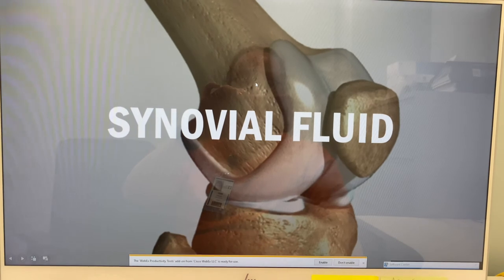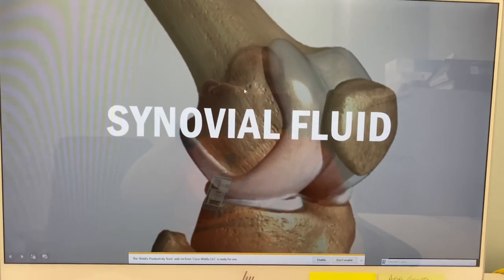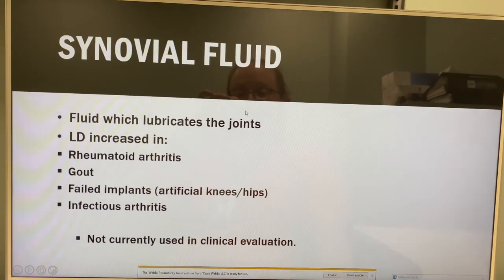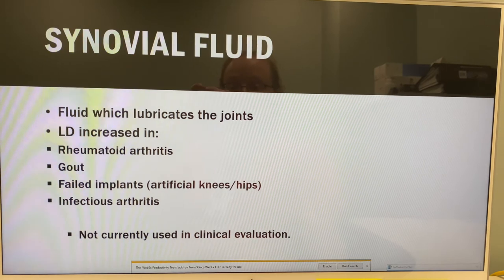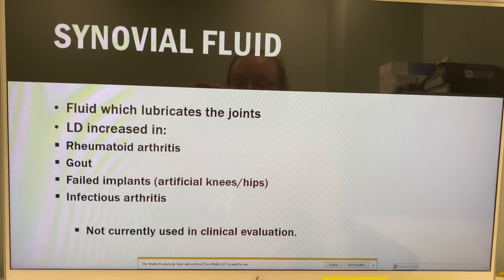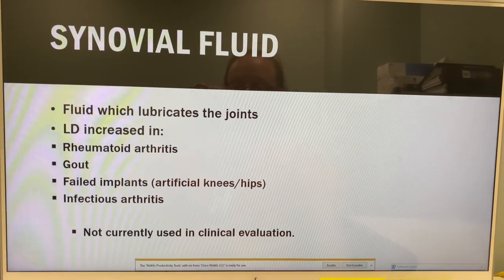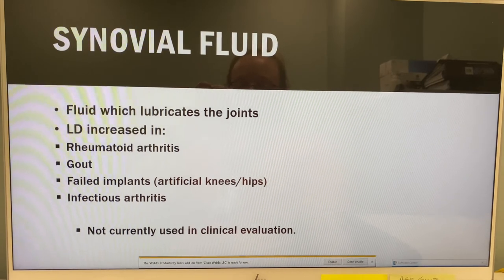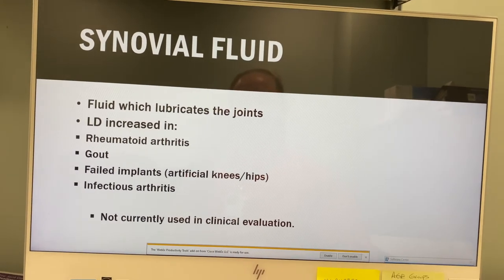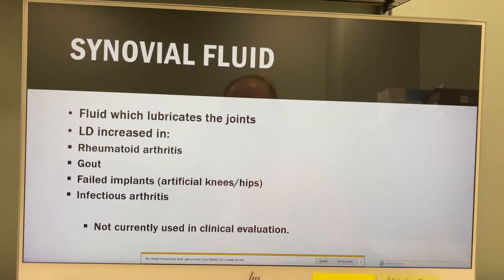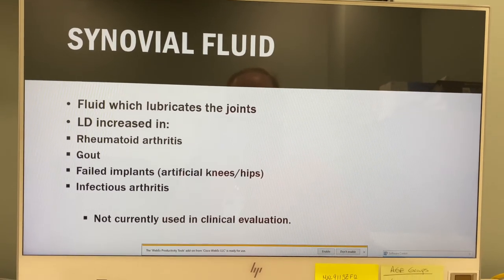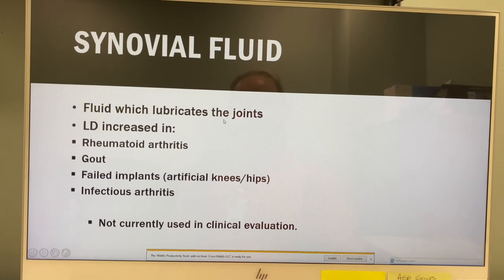Synovial fluid is joint fluid — for example in the knee or elbow — that lubricates the joints. LD will be increased in rheumatoid arthritis, gout, failed implants such as artificial knees and hips, and infectious arthritis. However, this is not really used in current clinical evaluation because synovial fluid is very sticky and our analyzers cannot run it — it would have to be sent to a special laboratory.